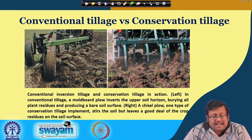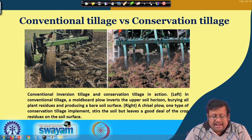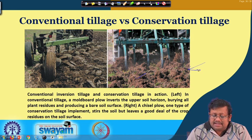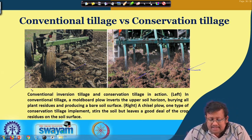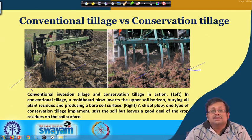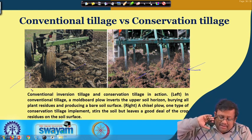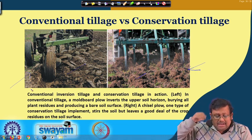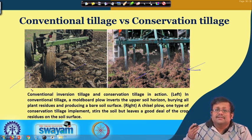Looking at a comparison of conventional tillage versus conservation tillage: in the conventional inversion tillage system, a moldboard plough inverts the upper soil horizon, burying all the plant residues and producing a bare soil surface. When we use a moldboard plough in conventional tillage, it inverts the whole soil, mixes and buries all the plant residues, and produces a bare soil surface — which creates a greater chance of erosion.